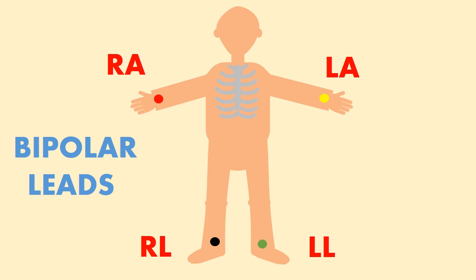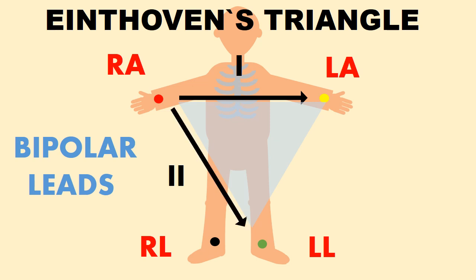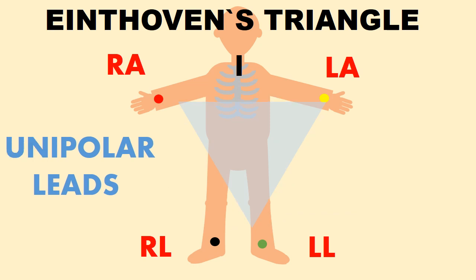The best way to understand the limb leads is using Eindhoven's triangle. The bipolar limb leads are Lead 1 between right arm and left arm, Lead 2 between right arm and left leg, and Lead 3 between left arm and left leg. The unipolar limb leads use only one electrode.